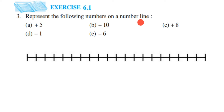We have to represent the given integers on the number line. Representing integers on a number line is quite different from representing natural numbers. Integers are both negative and positive, and in between we have zero.